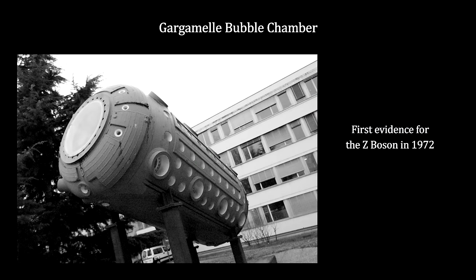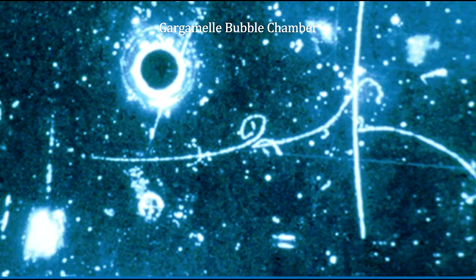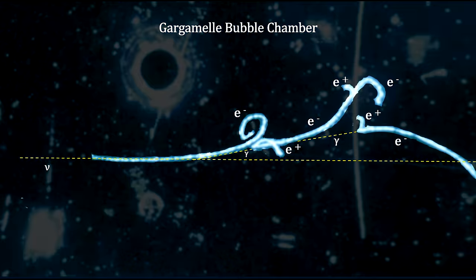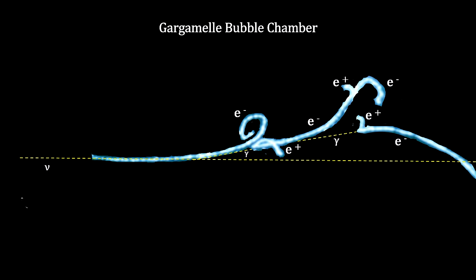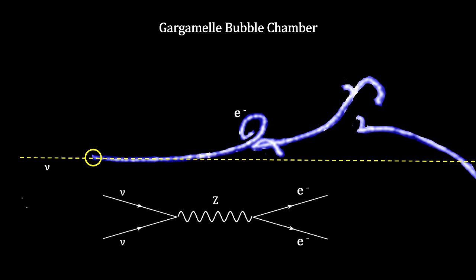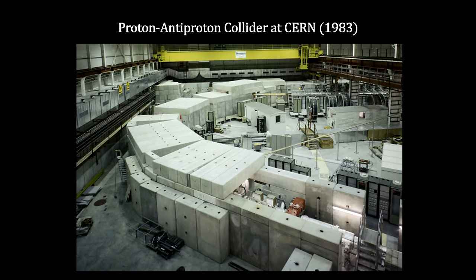Because of the significant amount of energy needed to produce these massive Z and W weak force bosons, it wasn't until 1972 that the first evidence for Enrico Fermi's weak interaction theory was found. This event shows a neutrino-electron interaction that would require a Z boson. It was recorded by the Gargamel bubble chamber at CERN. Final proof came for Z and W bosons when the proton-antiproton collider was built at CERN in 1983.